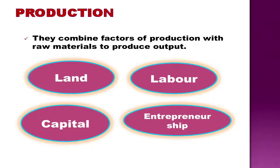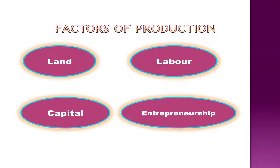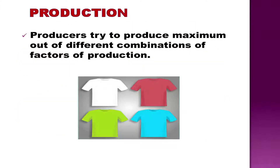The producers combine the factors — land, labor, capital and entrepreneurship — along with raw materials and transform them into various goods and services having different utility or want-satisfying power. Land, labor, capital and entrepreneurship are hence called the factors of production. Profit-maximizing producers try to produce the maximum amount of goods and services by using various combinations of factors of production.